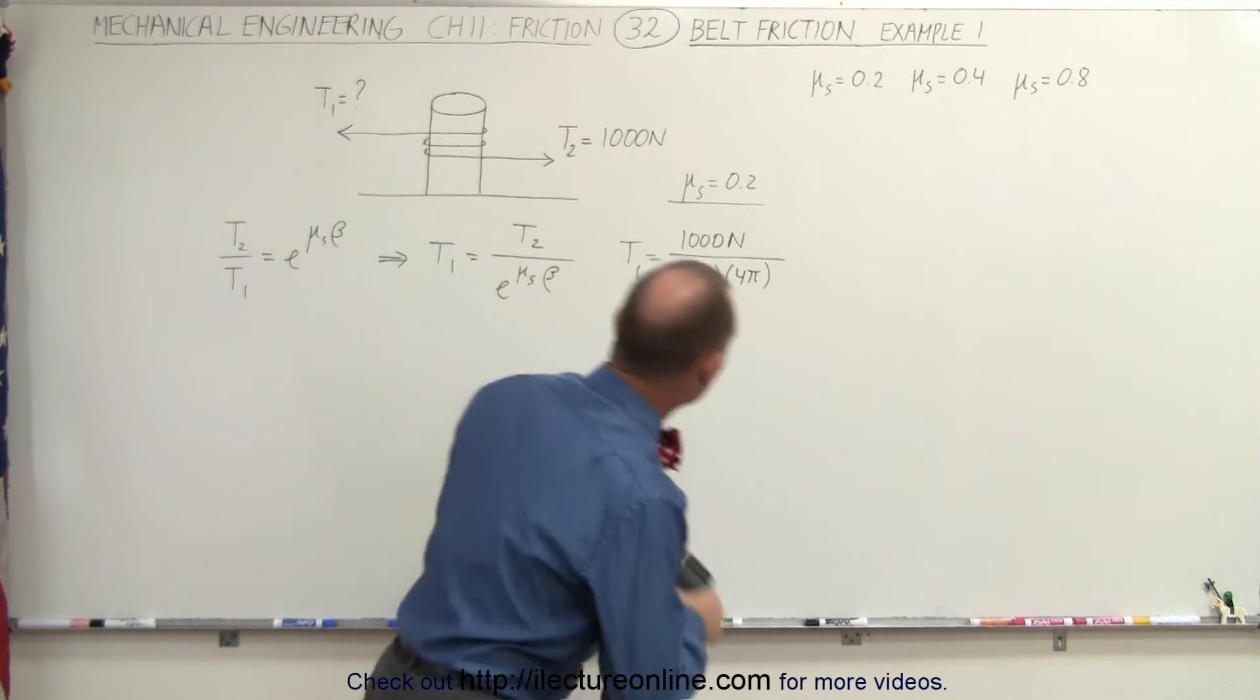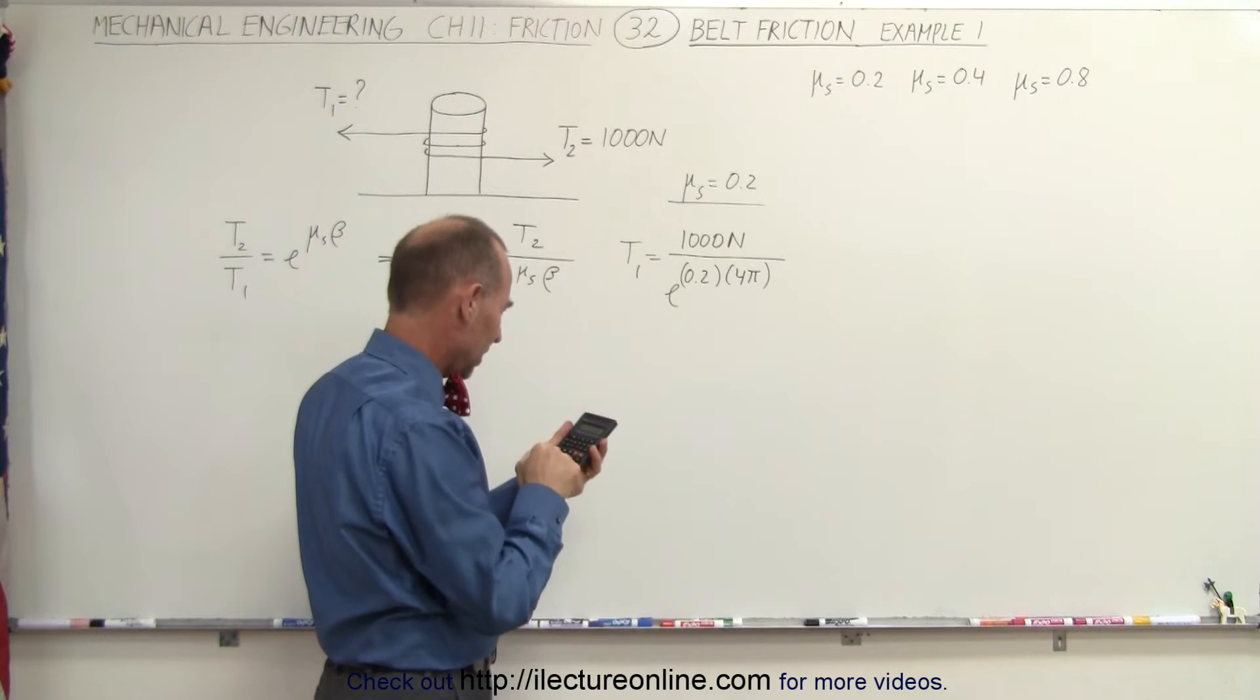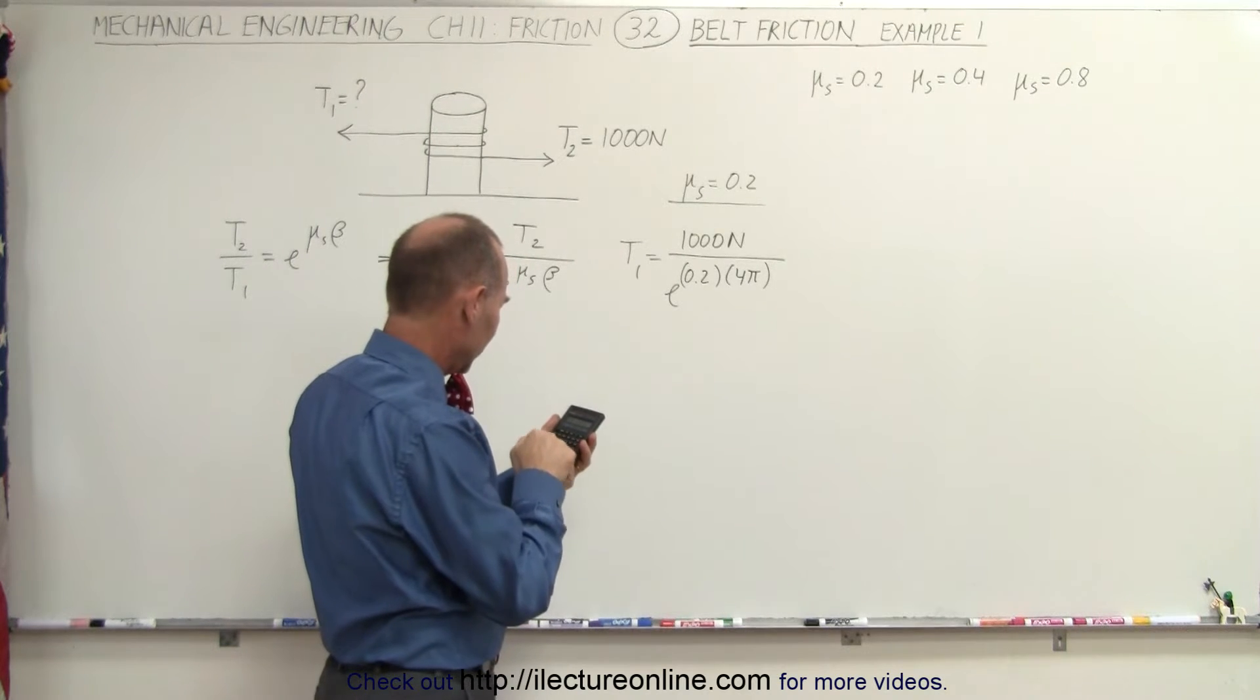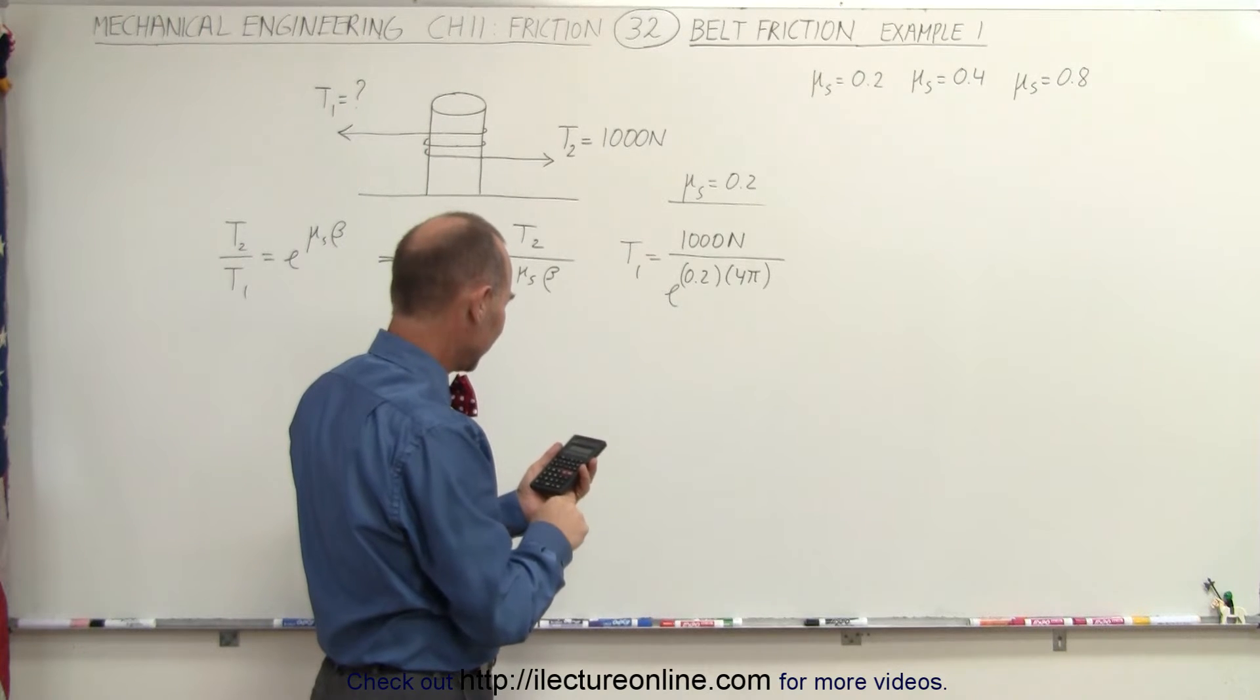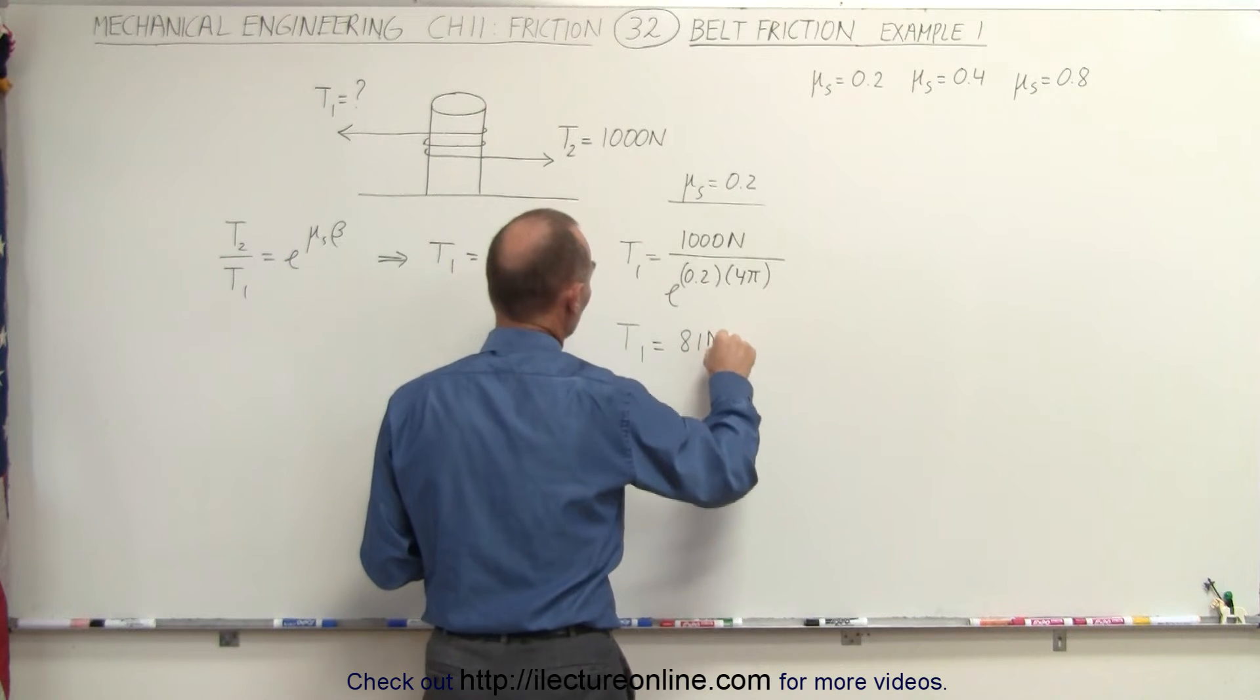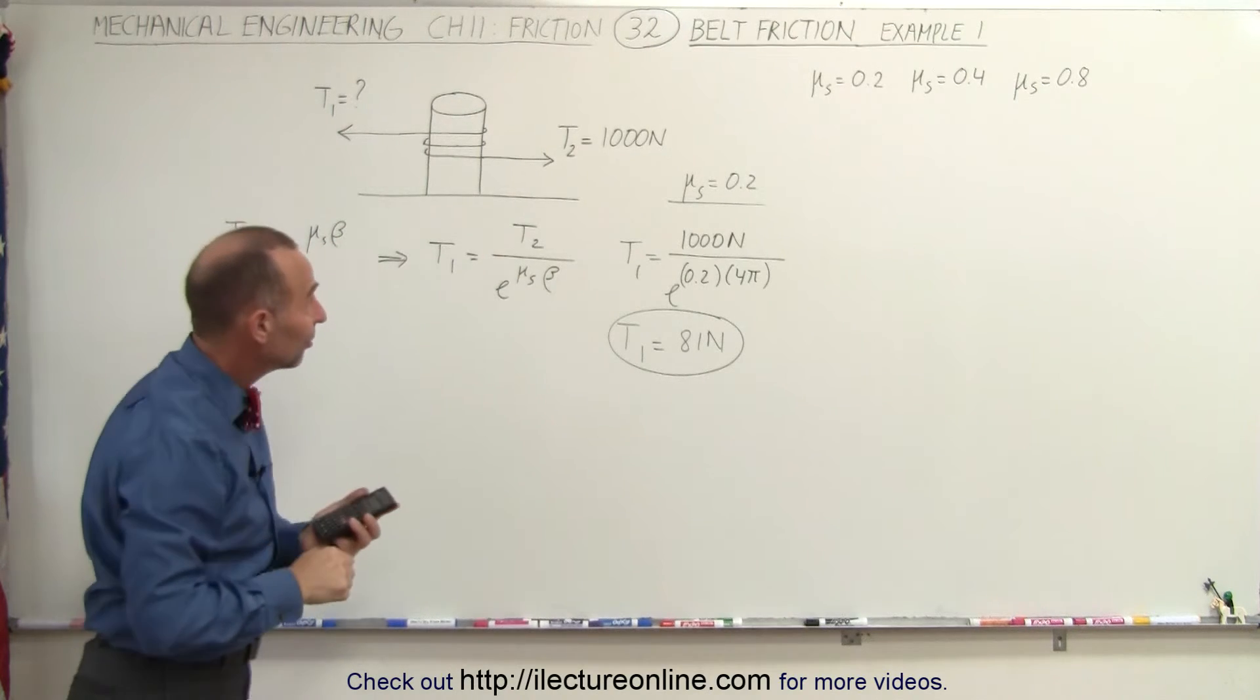And then with the calculator we get the following: 0.2 times 4 times π, raise that to as the exponent and times 1,000 equals, and that gives us exactly 81 newtons. So it requires T1 equals 81 newtons, the force required to keep this rope from slipping, which is kind of nice.